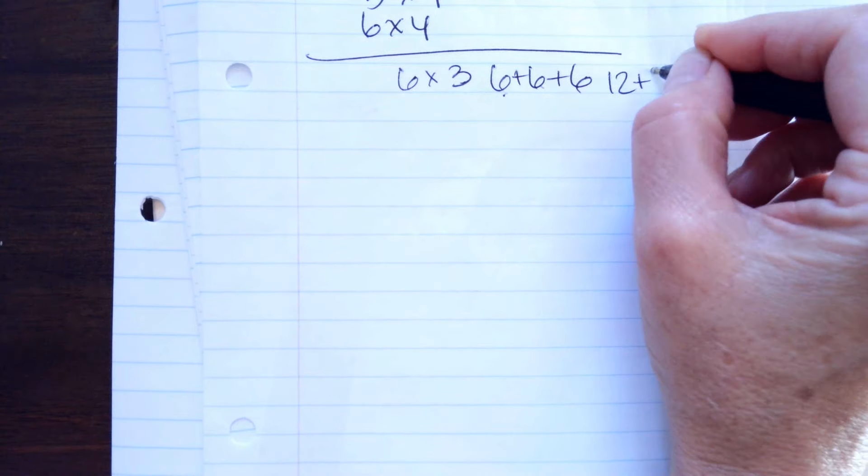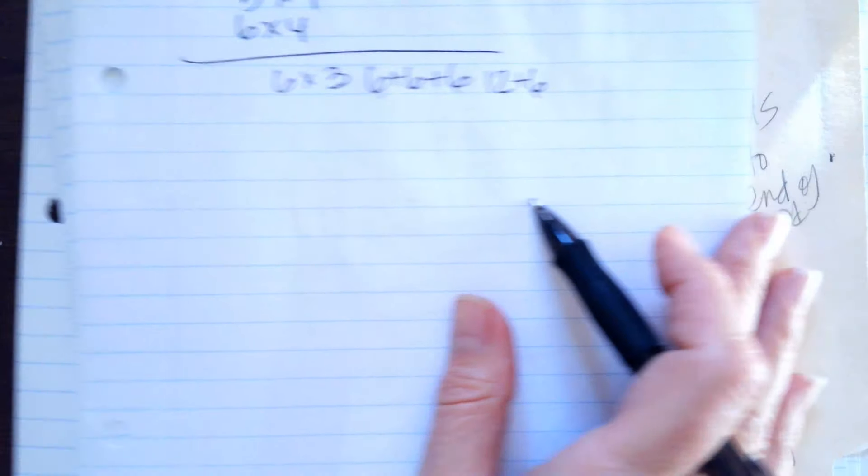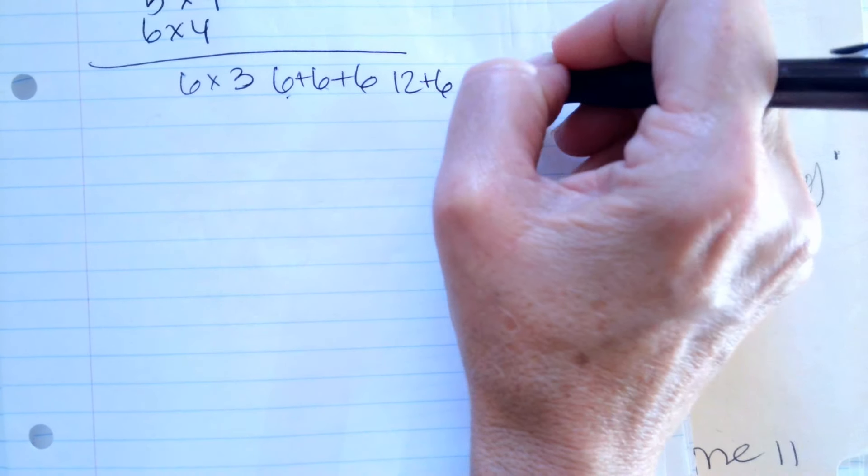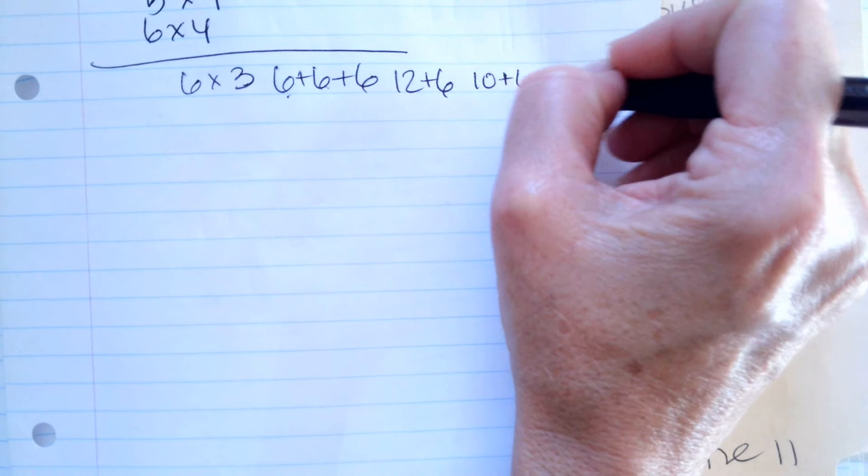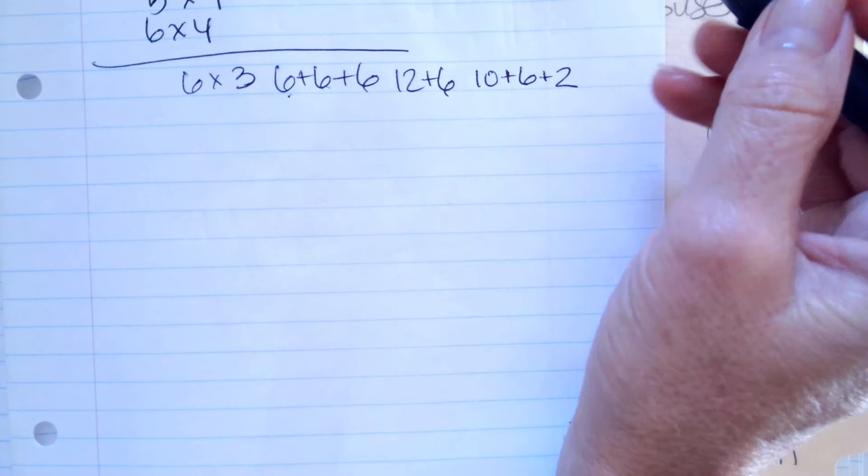We're going to use our plus 12 strategy which is turn it into a 10 plus 6 and then add the 2 to the back. So that'll make it easier.